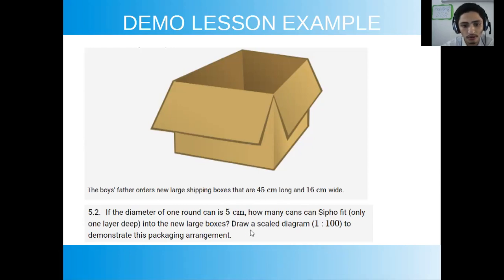For this question we're not going to draw a scale drawing but we are going to be considering it. So what you need to consider is the heights and all that you need to do is take the measurement of the diameter and divide it into the lengths to see how many cans can fit horizontally and vertically into the box. That will tell us then the amount of cans that can fit into one layer of the box because it specifically states that you need to consider only one layer deep.